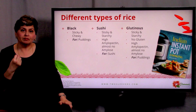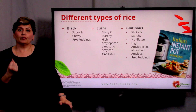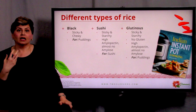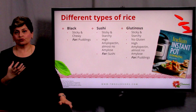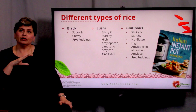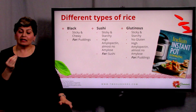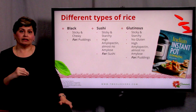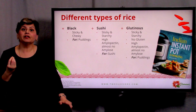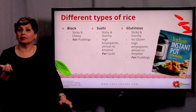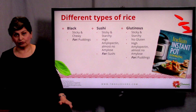To recap: between basmati, jasmine, brown rice, red rice, black rice, arborio rice, glutinous rice, and sushi rice — those rices have not only a very different level of starch, they have a different type of starch. So you have to be very cognizant of the finished dish and based on that, determine the type of rice that you need.